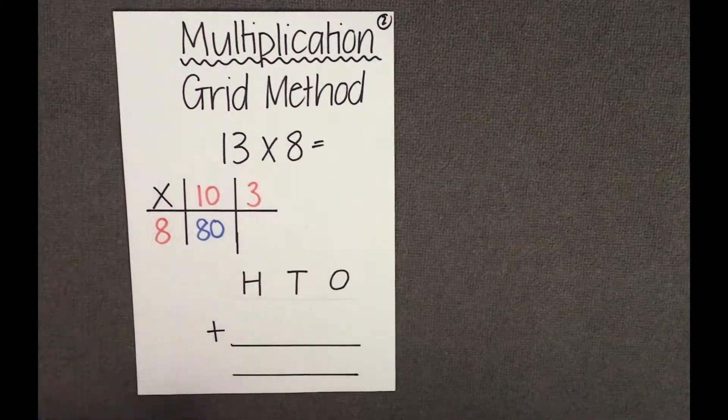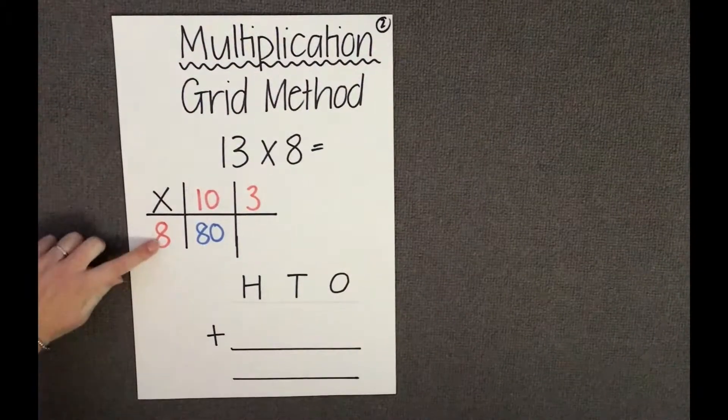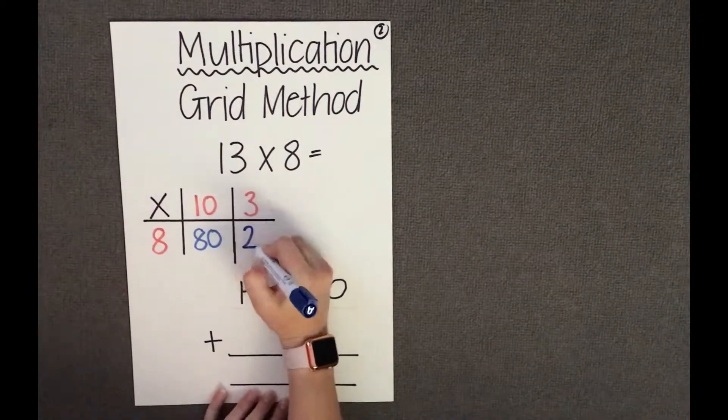And then we can multiply our ones. 8 times by 3 and we know our answer is 24.